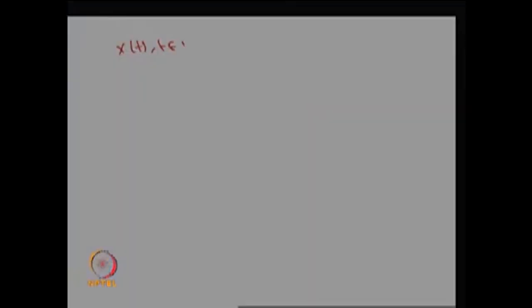Not only can we go for making a one-dimensional random variable or one-dimensional stochastic process — you can create a stochastic process that could be one-dimensional, two-dimensional, or n-dimensional.